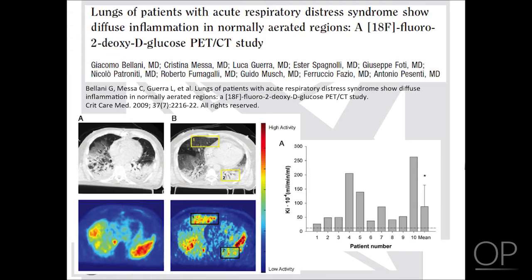These were the results of our first study, published in 2009 in Critical Care Medicine. We showed that all patients with ARDS had a diffuse inflammatory reactivity. This is the Ki of the normally aerated tissue of our subjects — on average this is much, much higher than controls, with about a sevenfold increase compared to controls. And this was in the tissue that on CT scan looked as normally aerated. So in the so-called baby lung, it looked normal on CT scan, but it was not normal at all — it had seven times the metabolic activity of healthy controls.